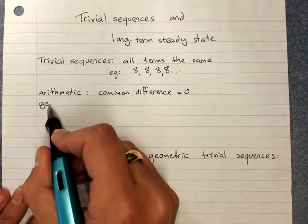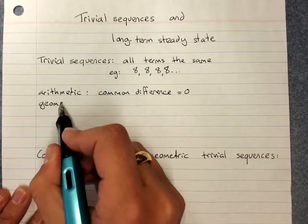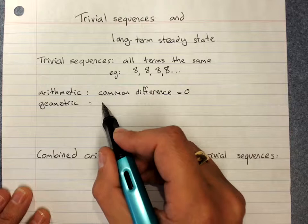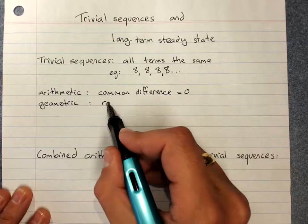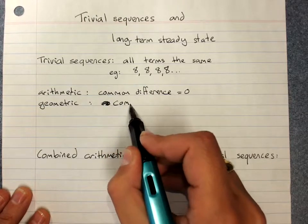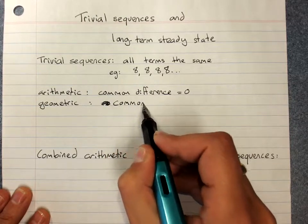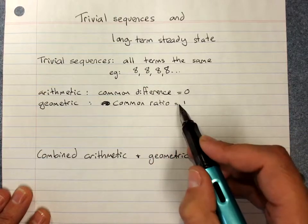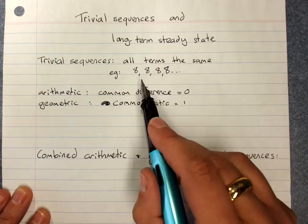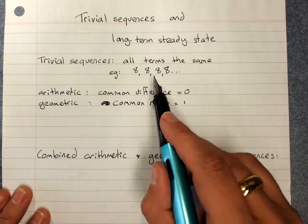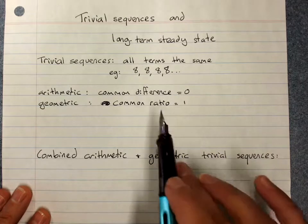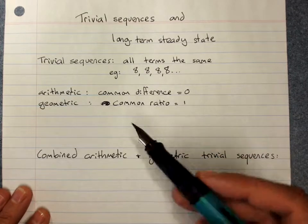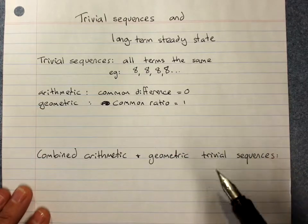A geometric sequence will be trivial if the common ratio is 1, because 8 times 1 is 8, 8 times 1 is 8. So if you have either of these on their own, you'll get a trivial sequence.